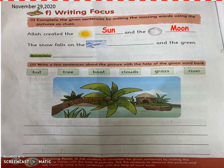Next is: 'the snow falls on the mountains.' We can see the snowy mountains here in the picture. 'And the green dash.' Now everybody knows that the last picture is of grass, so 'grass' will come in the blank.